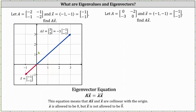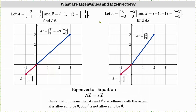And for one more example, let's consider a different matrix A but the same vector X, the vector [-1, -1], and again calculate matrix A times vector X. Matrix A times vector X in this case is the vector [2, 3]. We can see from the graph the two vectors are not parallel or collinear with the origin, since the vector [2, 3] is not a scalar multiple of the vector [-1, -1], which means the eigenvector equation is not satisfied with this matrix A and this vector X.